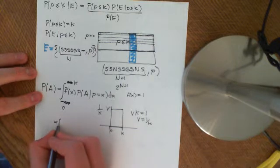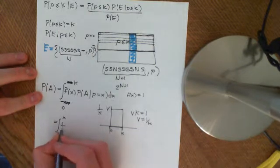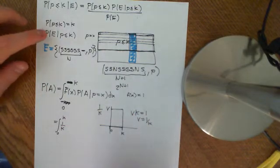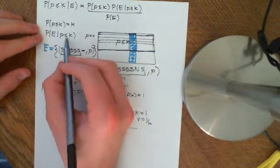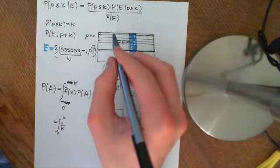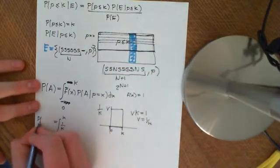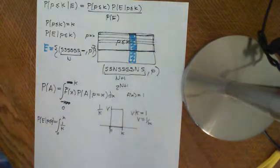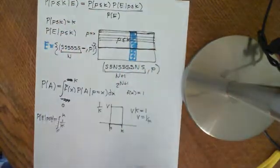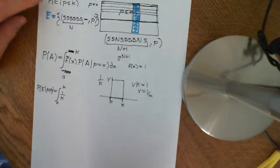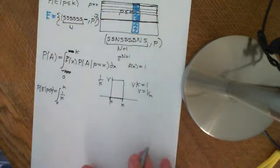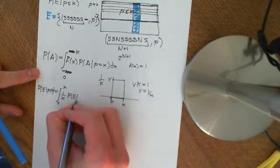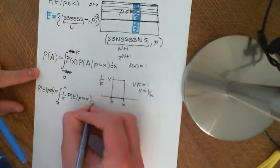So the conditional PDF is 1 over K. We set up the integral from 0 to K of 1 over K times the probability that E occurs given that P equals some little value x, dx. We want the probability that E occurs given P is less than or equal to K, viewing this restricted set as our probability space.